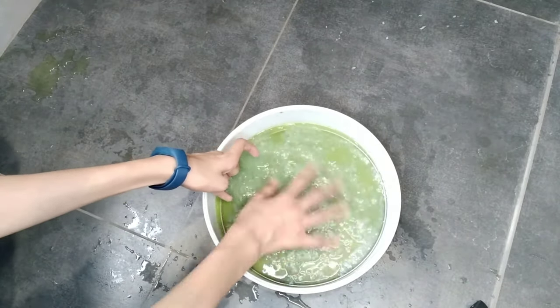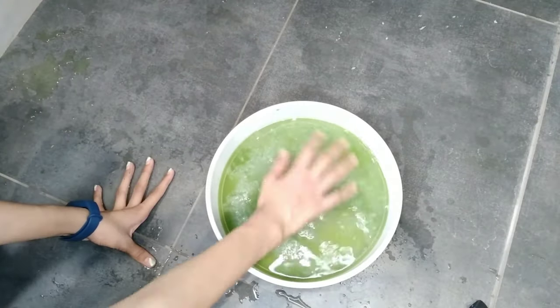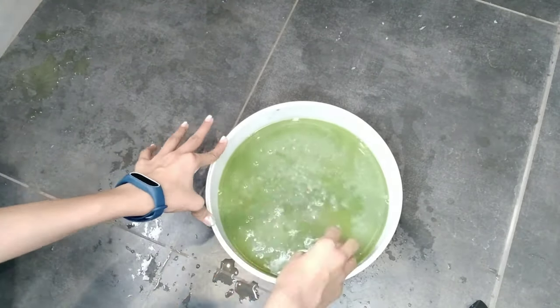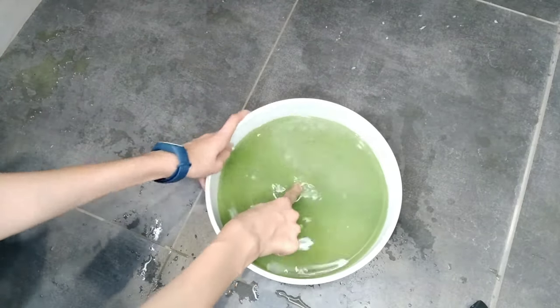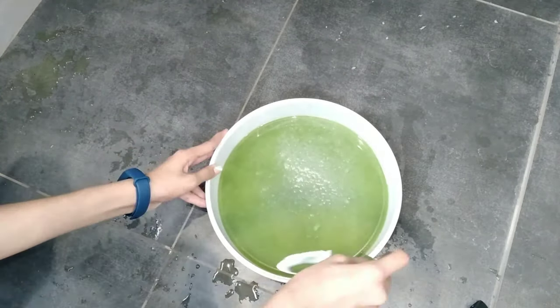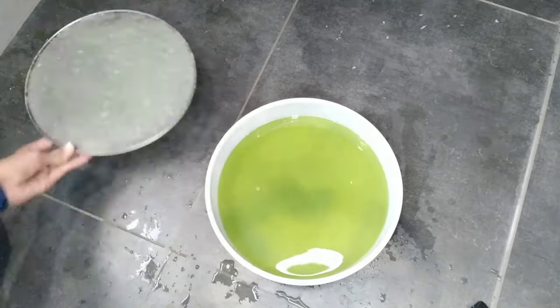Take some water in the container, put the strainer on it and add the pulp on the strainer, not into the water. Mix the pulp with water using your hand or any other tool. Wait for the pulp to settle on the strainer, then pull the strainer out of the container.